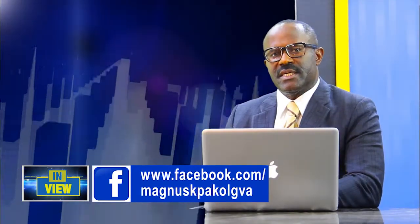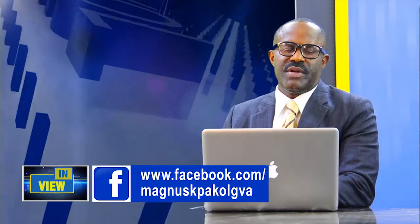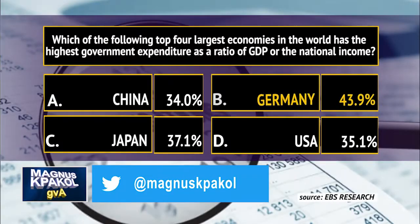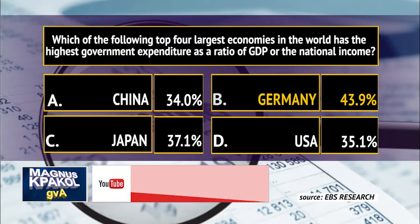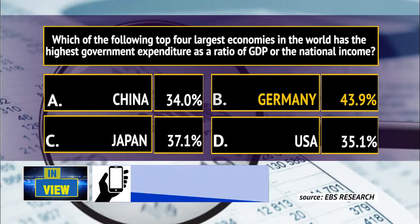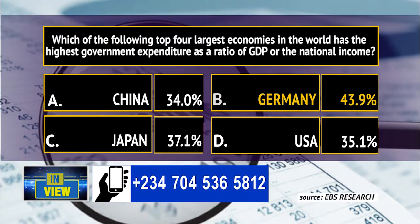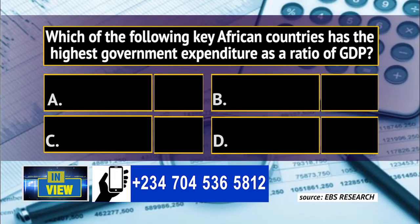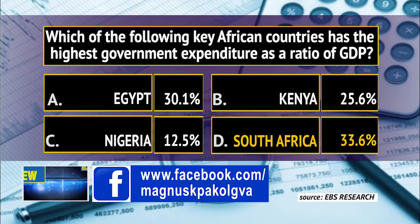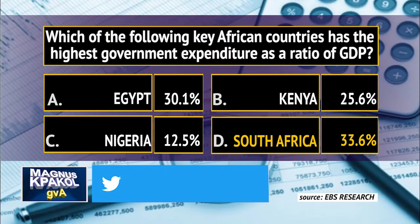Before we start our discussion, here are our quick view answers. Germany, with 43.9%, has the highest expenditure to GDP ratio among the world's largest economies. South Africa, with a ratio of 33.6%, tops Africa. For comments, adverts, and sponsorship, please see our information displayed on the screen.